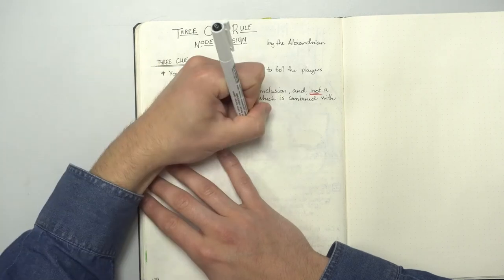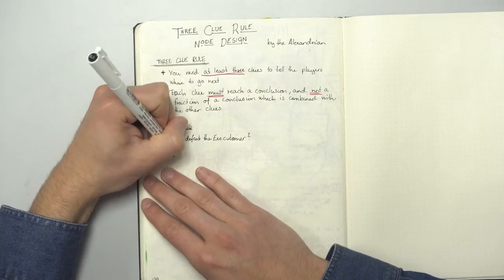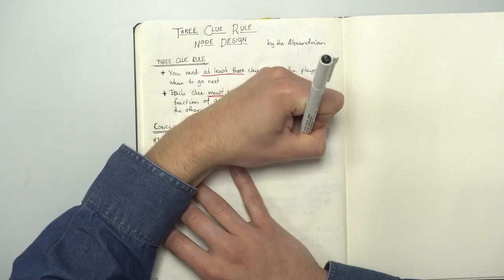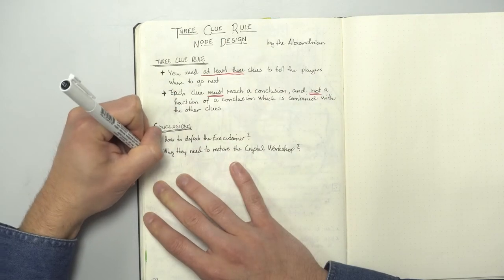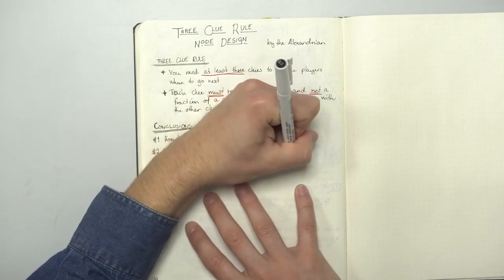So let's think about the conclusion we want to reach and come up with 3 clues for each of these. Conclusion number 1, how to defeat the executioner. Conclusion number 2, why they need to restore the crystal workshop. And conclusion number 3, how to restore the broken lighthouse.